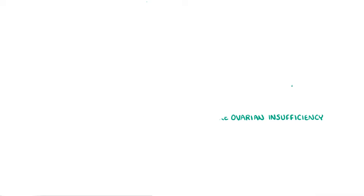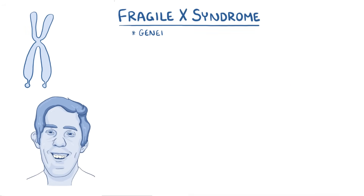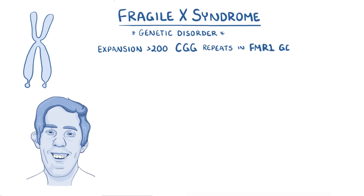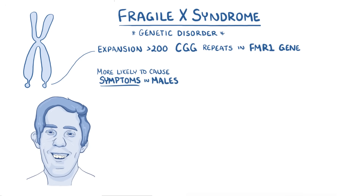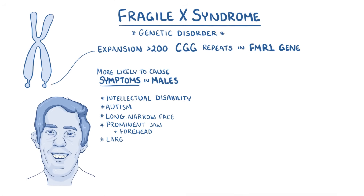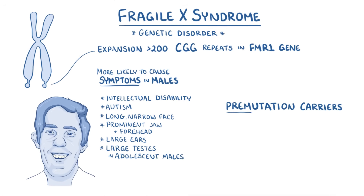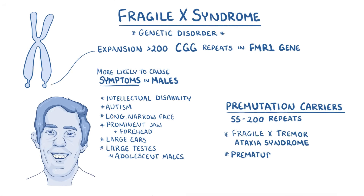As a quick recap: Fragile X syndrome is a genetic disorder caused by expansion of over 200 CGG triplet repeats in the FMR1 gene on the X chromosome. It's more likely to cause symptoms in males than females, and these symptoms include intellectual disability and autism, a long narrow face, a prominent jaw and forehead, large ears, and large testes in adolescent males. Pre-mutation carriers who have an intermediate number of repeats can have Fragile X tremor ataxia syndrome, as well as premature ovarian failure.